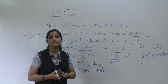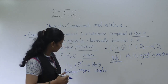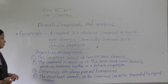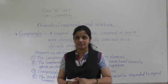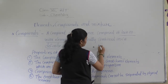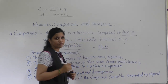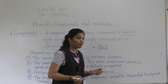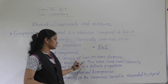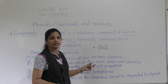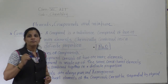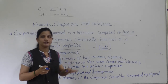Now the next point: properties of compounds. The first property of a compound — the compound consists of two or more elements. Just now we discussed some examples of compounds, how the water molecule is formed. H2O is one example of a compound. Here the combination of more than one element means hydrogen and oxygen. Hydrogen is one element and oxygen is another element, and they form one compound known as water. This is the first property of compound.